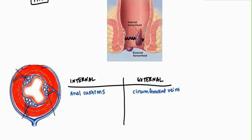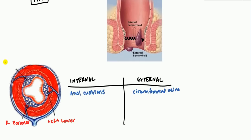I've drawn a diagram of the blood supply of the internal and external canal. There are three plexuses — the anal cushions found in the internal canal. The one on the left is called the left lower anal cushion, the one at the bottom is the right posterior anal cushion, and the one on top is the right anterior anal cushion. Your genitalia is on the anterior side.